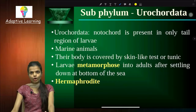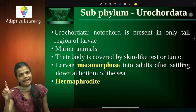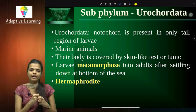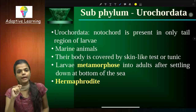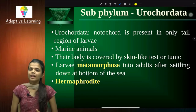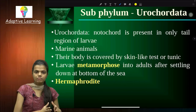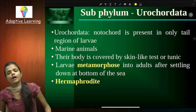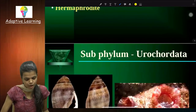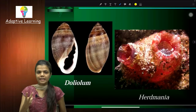In Urochordata, the notochord is present only at the tail region of the larvae. They are aquatic animals. Their body is covered with a skin-like tunic structure — that's why they are also called tunicates. The covering is made of cellulose, an organic material. Larvae undergo metamorphosis — a natural process of growing from baby larvae to an adult organism. They are hermaphrodites, meaning male and female sex characters are both present on the same animal. Examples are Doliolum and Herdmania.